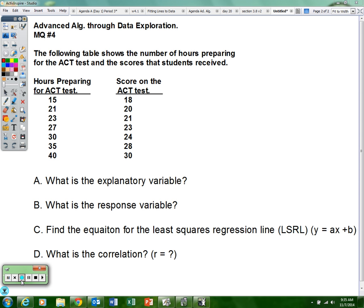We are going to answer: A, what is the explanatory variable? B, what is the response variable? C, find the equation for the least squares regression line, the LSRL—that's your Y equals AX plus B, that's your equation for this scatterplot. And D, what is the correlation, the R—how strong is it, what direction is it going?